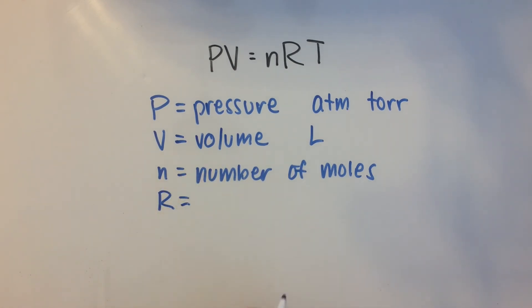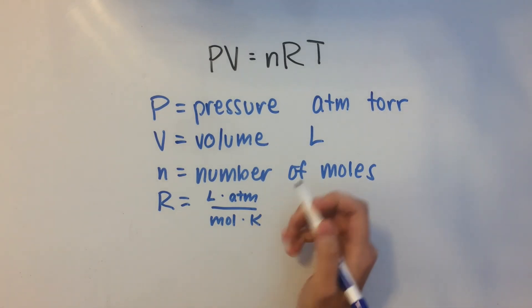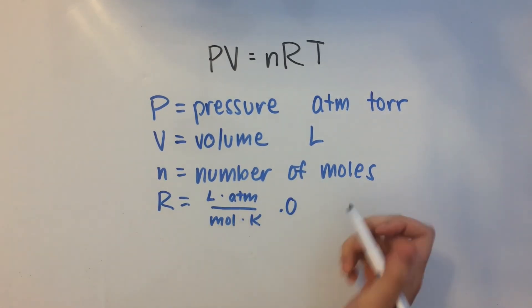R is a constant. Its units are liter atmosphere over mole times Kelvin. And this value, the value for R since it's a constant is 0.0821 if you're talking about atmospheres. It's something different for liter torr over mole Kelvin. But I just memorize this one.